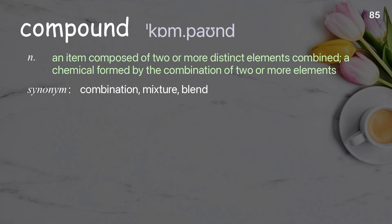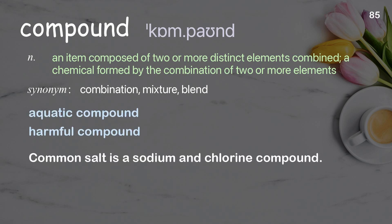Compound: an item composed of two or more distinct elements combined; a chemical formed by the combination of two or more elements. Examples: aquatic compound, harmful compound. Common salt is a sodium and chlorine compound.